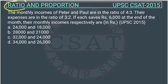This is a question on ratio and proportion asked by UPSC in the CSET paper of 2015. The monthly income of Peter and Paul are in the ratio of 4 is to 3.